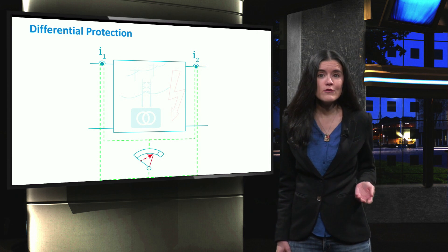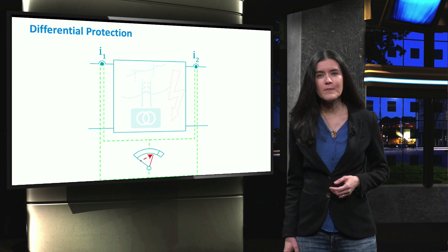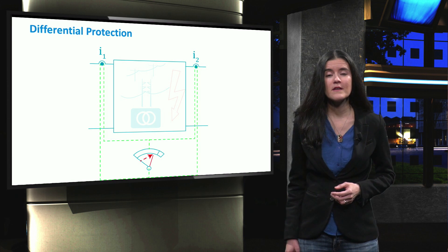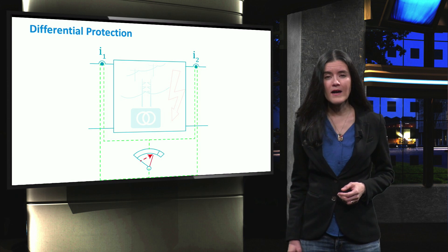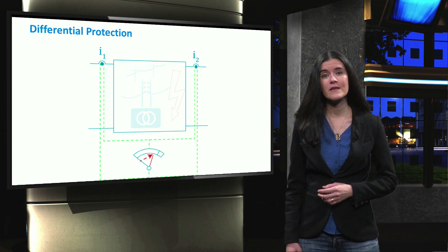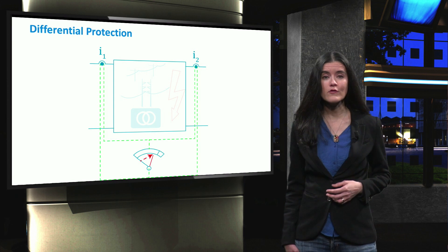Differential protection is usually used to protect important machines or equipment. This method has the highest selectivity among the protection schemes as it protects any equipment during an internal fault.